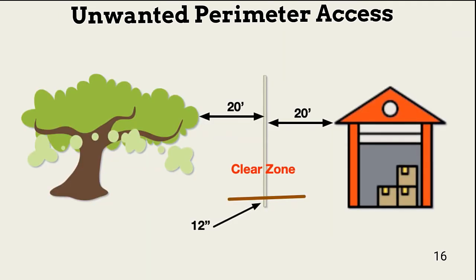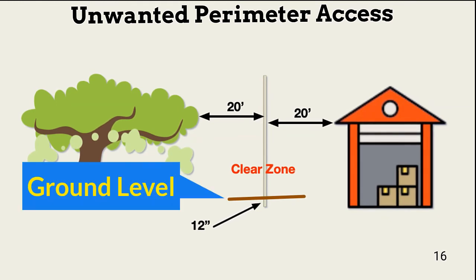Walls and fences are not perfect — intruders can climb them or cut through fences. To help prevent going over the barriers, trees and structures should be at least 20 feet from the barrier. Fences should have a clear zone on each side to enable detection of anyone attempting to damage them. Intruders can also go under fences; to deter this, fences should be embedded at least 12 inches into the ground.